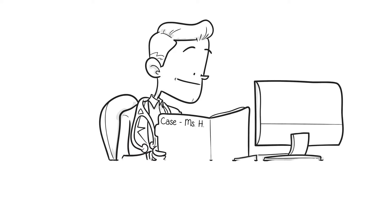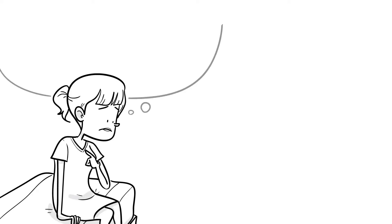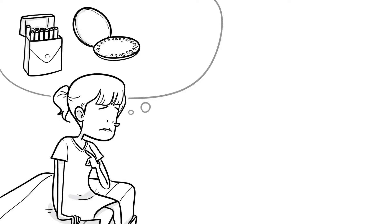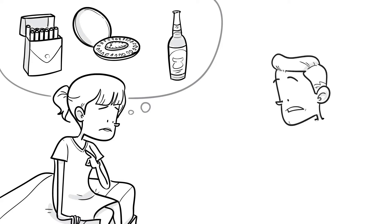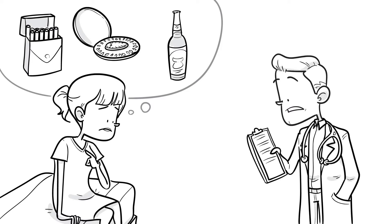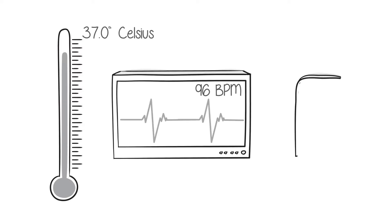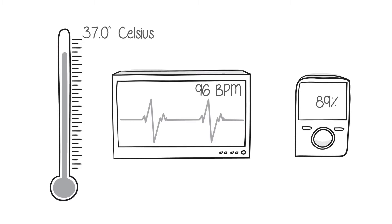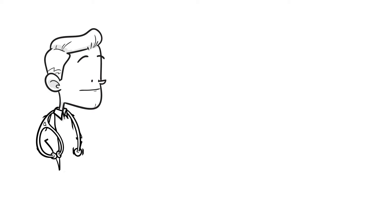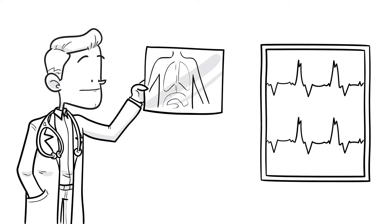Let's look at a case now to show you how to use the ART to assess the problem representation of a trainee. Ms. Henderson is a 20-year-old woman who developed shortness of breath and chest pain after returning from a vacation to Spain. Her pain developed suddenly one morning while seated at her desk. It is right-sided and worse with a deep breath. She has no medical history and takes a daily oral contraceptive pill. She smokes half a pack of cigarettes daily and drinks alcohol on weekends. Her temperature and blood pressure are normal. The heart rate is 96 beats per minute and the oxygen saturation is 89% on room air. Her physical exam is otherwise normal. The chest x-ray is normal and the EKG reveals sinus tachycardia 106 with a right bundle branch block. There is no old EKG for comparison.